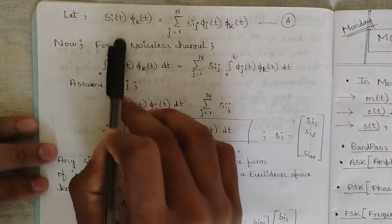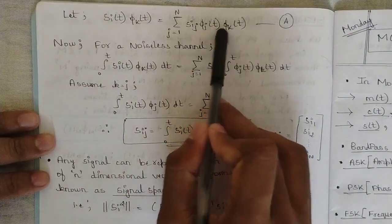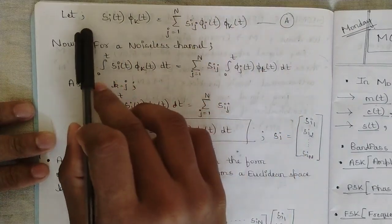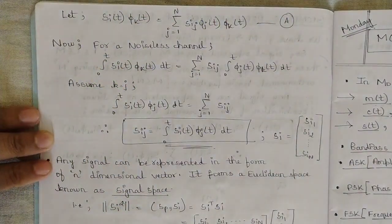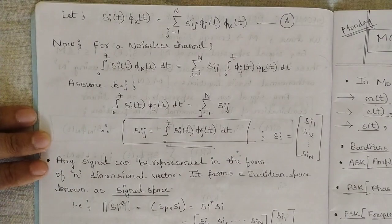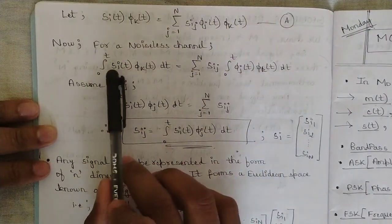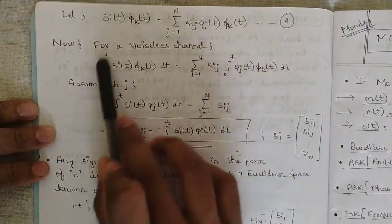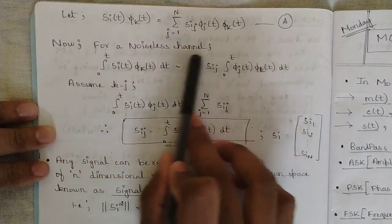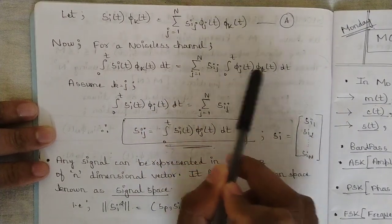Let s_I of t multiplied by phi_k of t equal the summation from j equal to 1 to N of s_Ij times phi_j of t times phi_k of t. In the equation for s_I of t, we multiply both sides by phi_k of t — an additional orthonormal basis function — in order to recover the original signal. For the noiseless channel, we then integrate both sides from 0 to T: integral of s_I of t times phi_k of t dt equals summation from j equal to 1 to N of s_Ij times the integral from 0 to T of phi_j of t times phi_k of t dt.